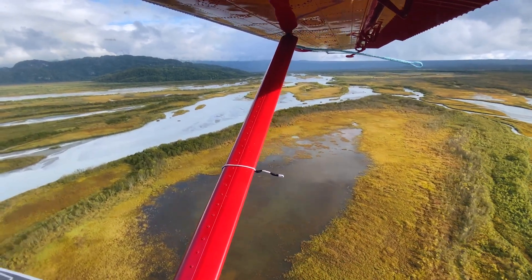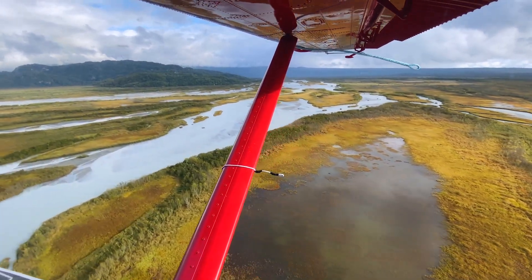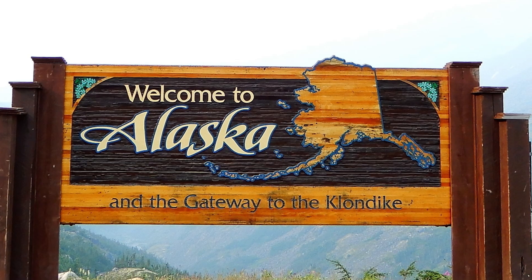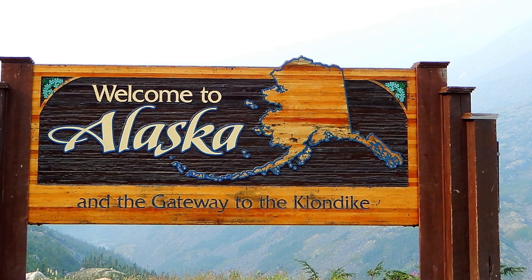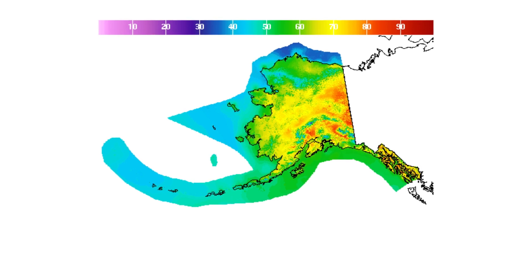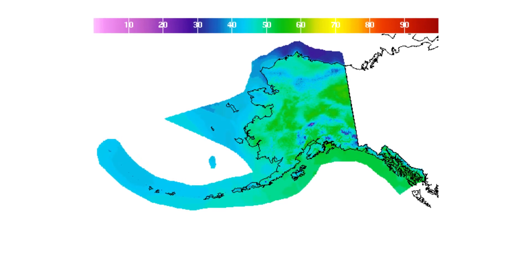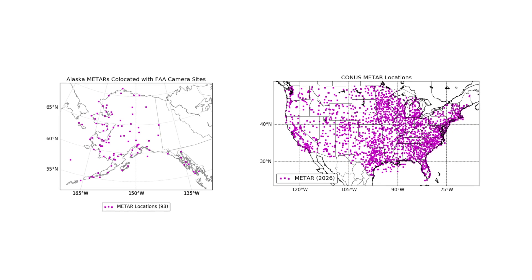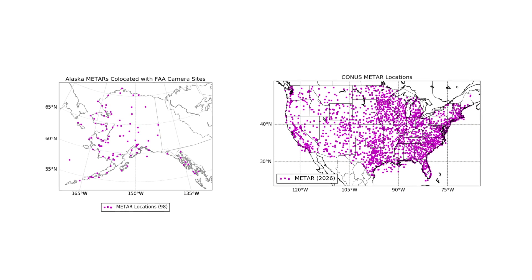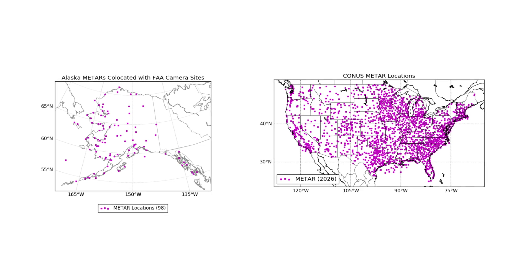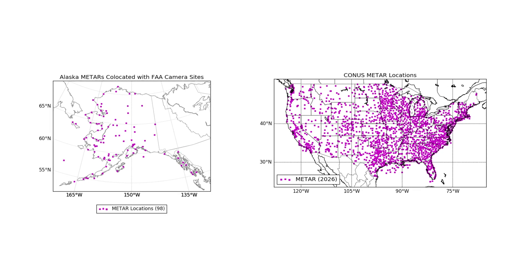The Alaskan landscape is among the most beautiful in the world, with vast forests, towering mountain ranges, and beautiful seascapes. But it is also among the most challenging for pilots to navigate, due to weather that can vary dramatically from one location to the next and change rapidly. Complicating the impact of weather is the fact that there are very few weather observation stations in Alaska to provide up-to-date information on the conditions, especially those that can make air travel challenging.